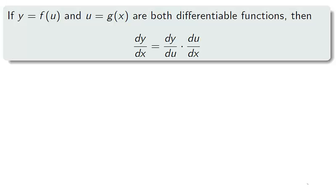We obtained an expression which is an alternate version of the chain rule. Let's manipulate this into an easier form. Since u equals g of x, the derivative of u with respect to x is g prime of x.